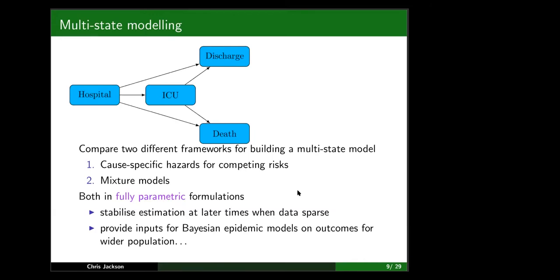We'll compare two different methodological frameworks for building this multi-state model. One framework is based on cause-specific hazards — the more well-known way of constructing competing risks or multi-state models — and I'll contrast that with a less well-known framework based on mixture modelling. Both methods are implemented in a fully parametric way. We considered both parametric and non-parametric methods, but parametric methods gave more stable estimates at later times when data were sparse.